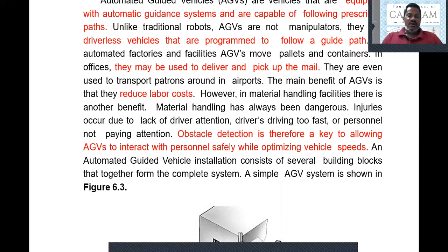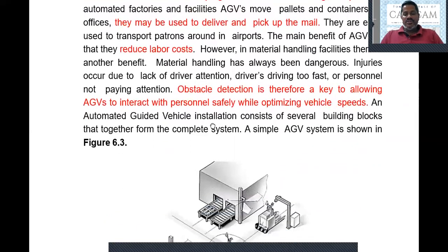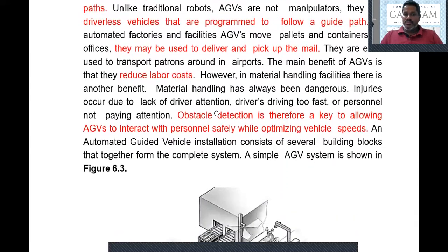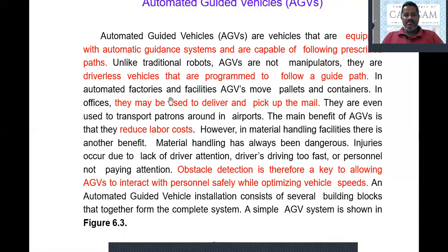The program already defines on which path the vehicle must move, at what time it needs to pick up goods, and at what time it needs to deliver goods at a different location. All this is taken care of by the program, not the human being. Because of that, accuracy, time saving, and floor space optimization are all achieved. We can optimize everything — transportation time, floor space, and accident prevention — using Automated Guided Vehicles.